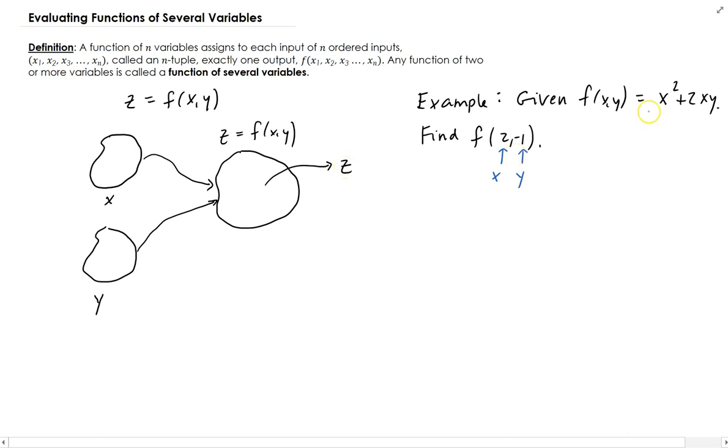So we can do that just by evaluating this expression for x and y. So this is going to be f of 2, negative 1, equals 2 squared plus 2 times 2 times negative 1.